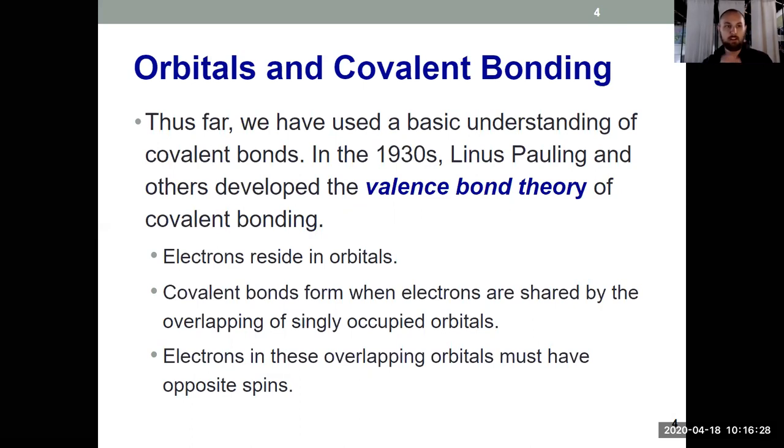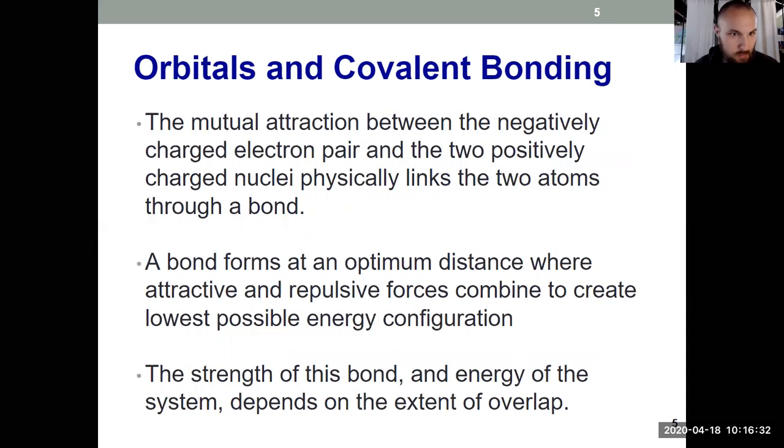But basically, the big takeaway right here, orbitals have to overlap to form a bond. Why does that form a bond? Because when I share those electrons, which are negatively charged, I put them between two nuclei, which are positively charged. They're attracted to both nuclei. The electrons are attracted to both nuclei simultaneously. That helps form our bond. And that bond is established at a certain distance, where we have the lowest possible energy, which is controlled by our orbital overlap.